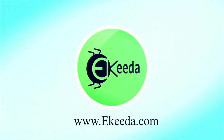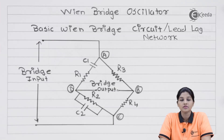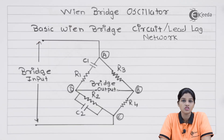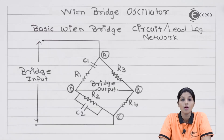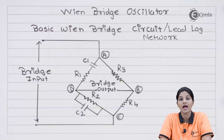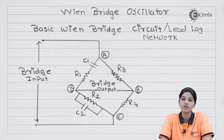First of all, we know that an oscillator is a circuit which is used for generation of oscillations at the output. These oscillations are nothing but AC signals. An oscillator does not use any input signal for producing the output signal, but it uses a power supply, and as long as the power supply is available, the oscillator produces signals at the output.